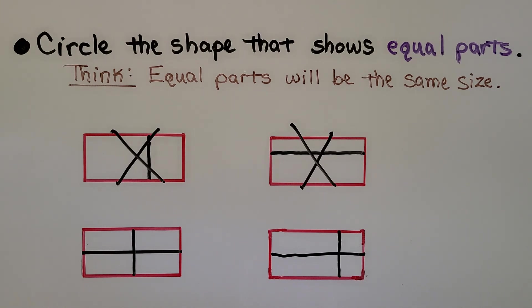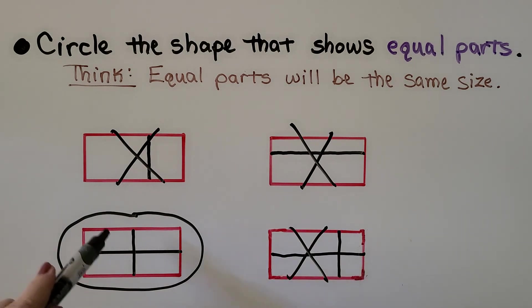Yes, they are. That's fourths. And these are not the same size. We have two squares and two rectangles. So it's not this one. So we know this is the shape that shows equal parts.